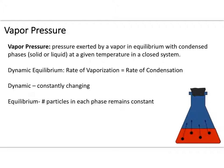Vapor pressure is the pressure exerted by a vapor in equilibrium with a condensed phase — something in a solid or liquid phase — at a given temperature in a closed system. When a liquid is in a closed system, it's possible for molecules to enter the vapor or gaseous form.